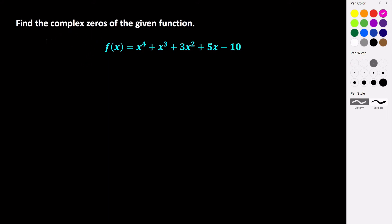When you're trying to find the zeros of a polynomial function, what you need to do first is ask yourself what is the degree of this polynomial function. The degree is going to help us determine how many zeros we're actually looking for. In this case, we have a fourth degree polynomial function, which means we are looking for four zeros.